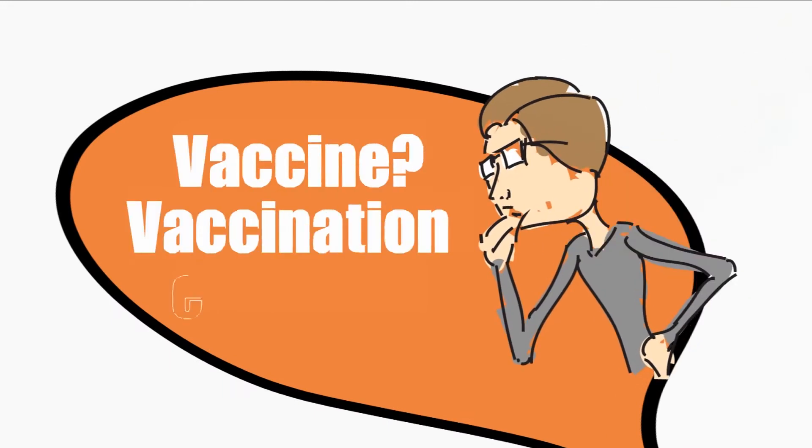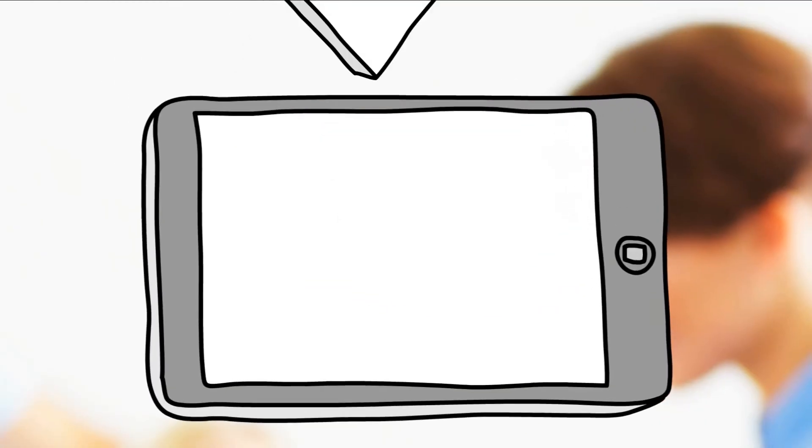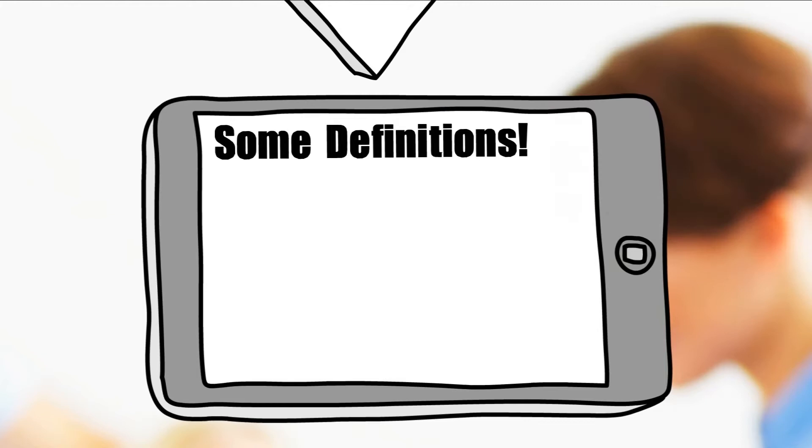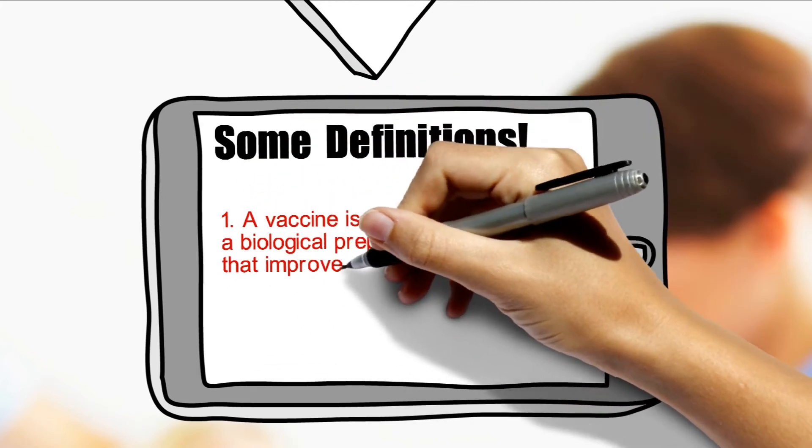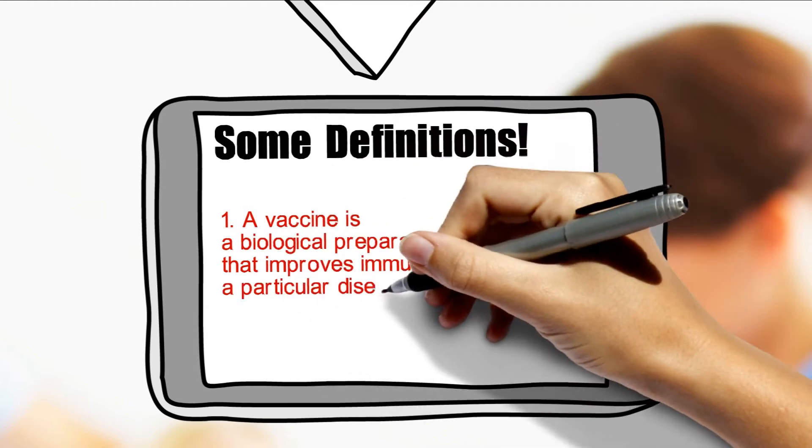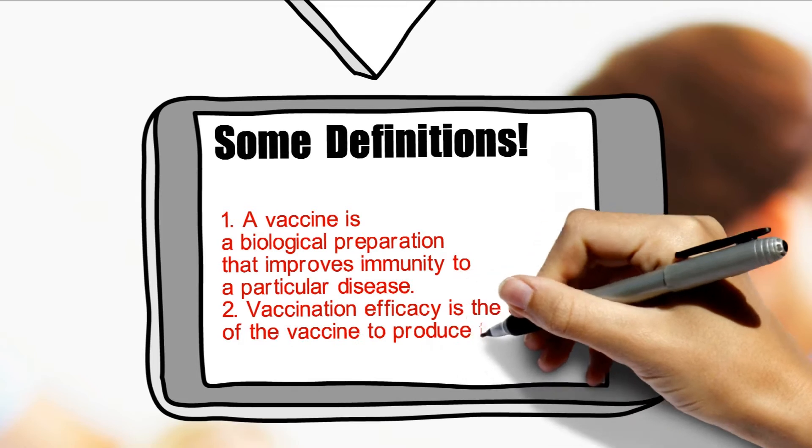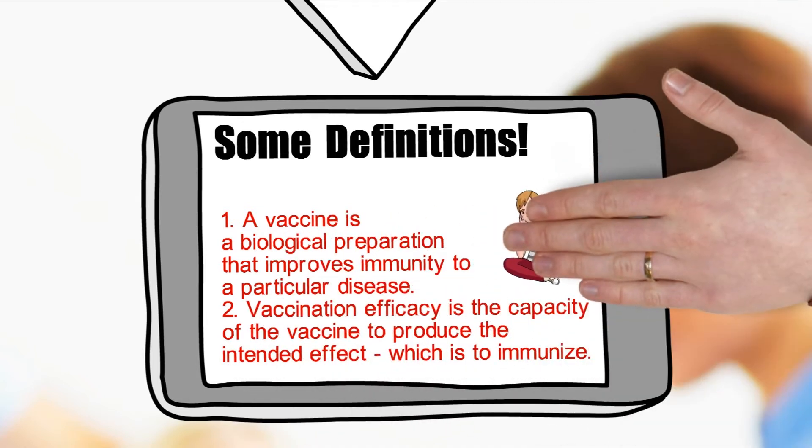What is a vaccine and how can we define vaccination efficacy? First off, a vaccine is a biological preparation that improves immunity for a particular disease. We use the term vaccination efficacy to capture the capacity of the vaccine to produce the intended effect, which is to immunize.